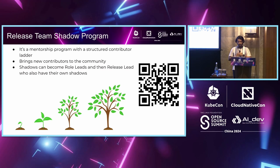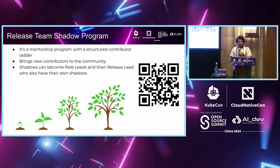The Kubernetes release team has a shadow program — a mentorship program with a structured contributor ladder designed to bring in new contributors with zero Kubernetes experience. The shadow application is currently open; you can scan the QR code to apply. The program progresses from shadow to role lead, then release lead, and eventually emeritus advisor — a great way to contribute to the Kubernetes release team.